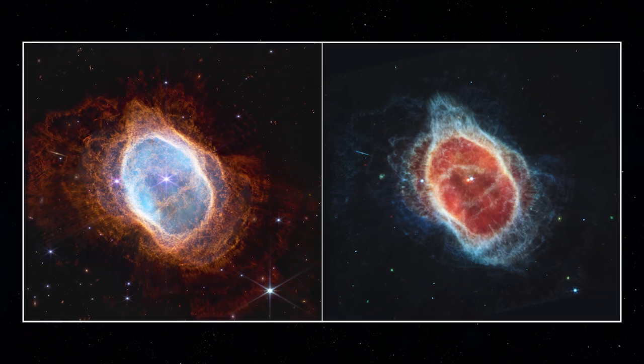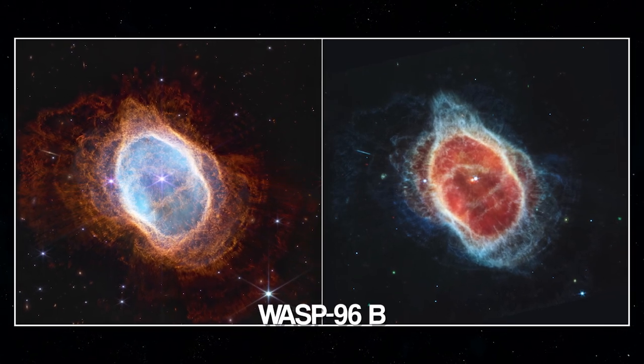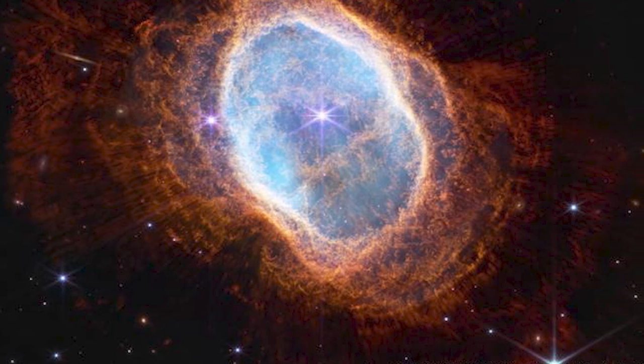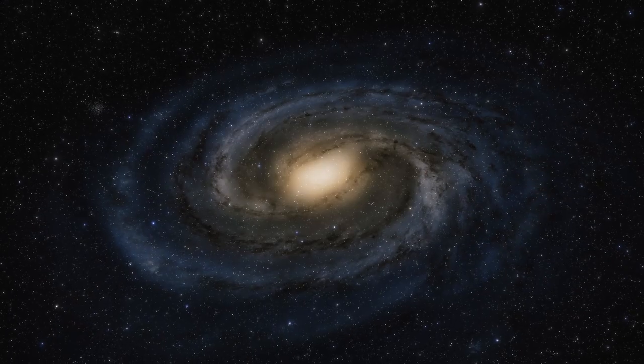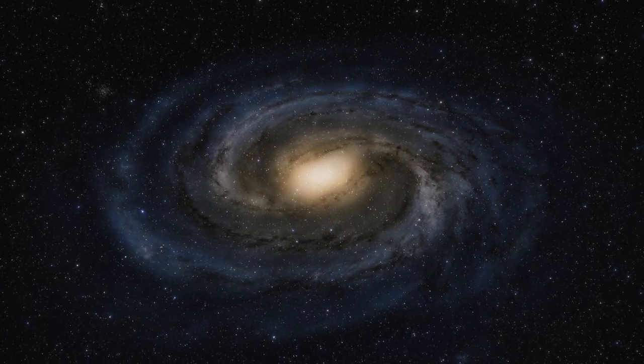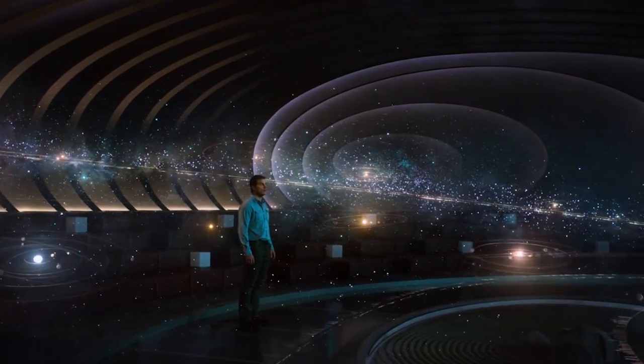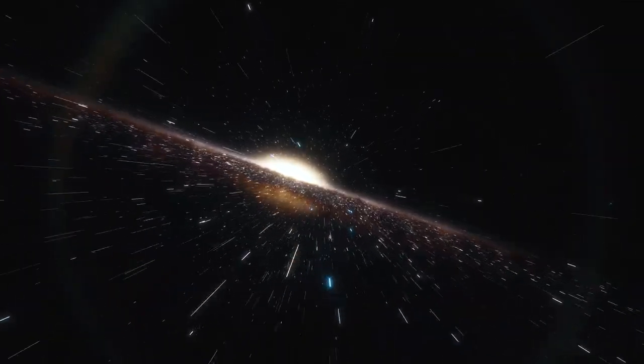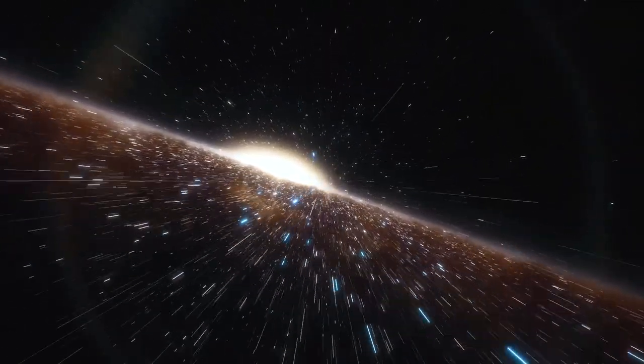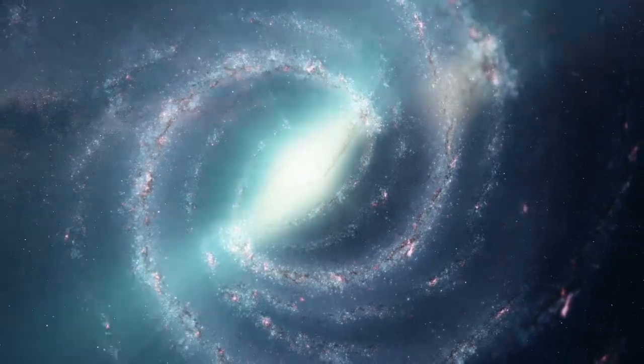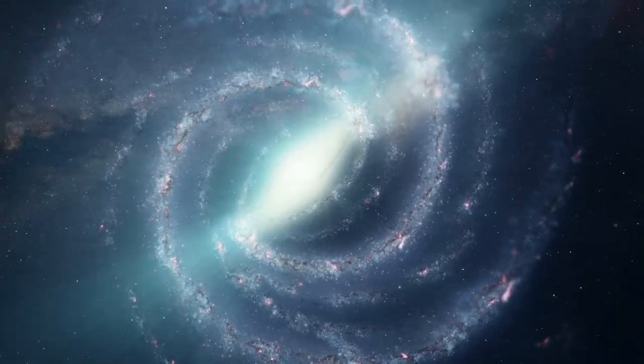Then there's the spectral data from WASP-96b, a really hot, giant, gassy exoplanet whose atmosphere is revealed in unprecedented detail. This isn't your typical image, but rather something far more valuable. It's a spectral data set that helps us understand what it's like to stand on a space-born object rather than what it looks like, and as they say, the book is frequently superior to the film.